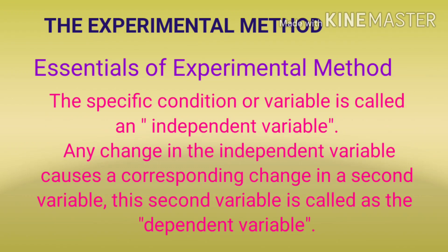This specific condition and variable is called the independent variable. Any change in the independent variable produces a corresponding change in the second variable. If we change the independent variable, there will be a change in the second variable. That second variable is called the dependent variable. So in the experimental method, behavior is affected by many variables and conditions, and we distinguish between independent and dependent variables.